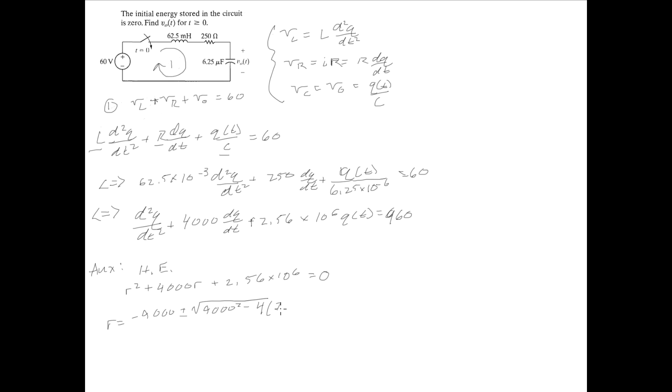minus 4AC is 1, so times C is 2.56 times 10^6. Extend that over 2A, which is just going to be 2. If you do the calculation,